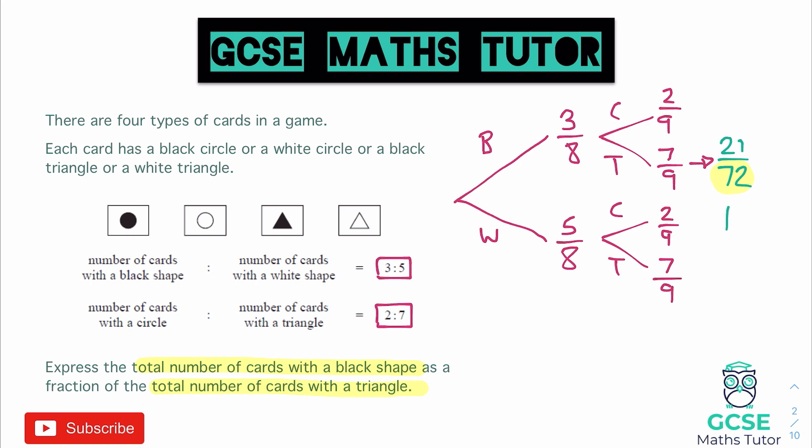So if we imagine here, particularly as we're going to be writing a fraction, so it doesn't matter if it has been simplified or not, let's just imagine that there are 72 cards. Now, of course, we didn't necessarily need it for this question because we know here the total of this ratio is eight, and the total of this ratio is nine. So we could just do eight times nine, which gives us that 72,